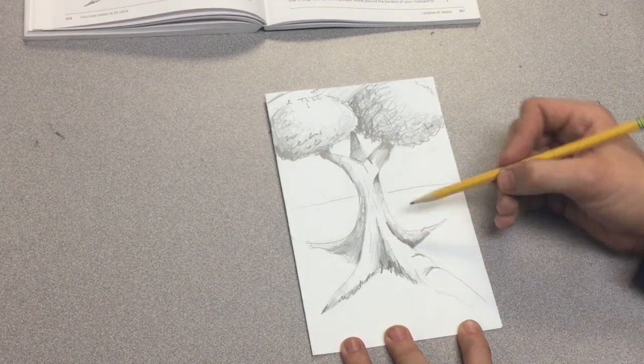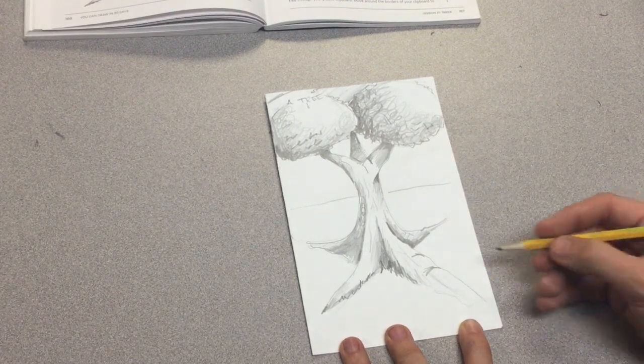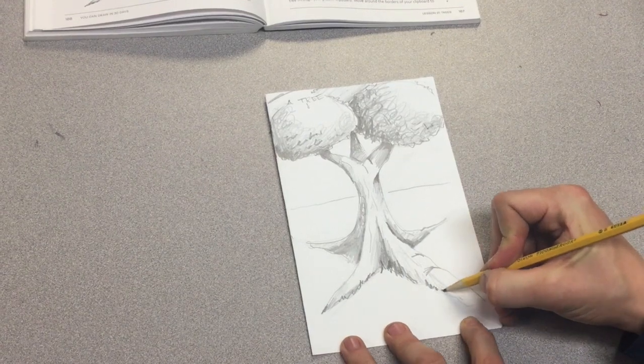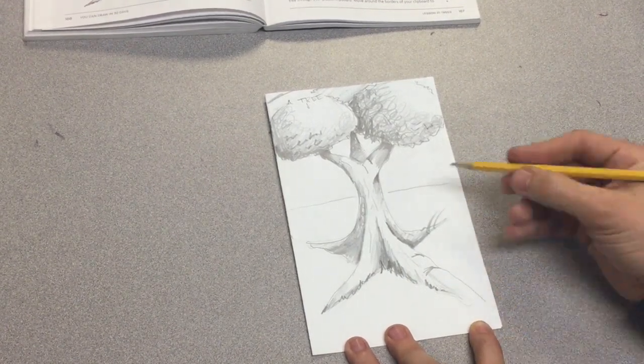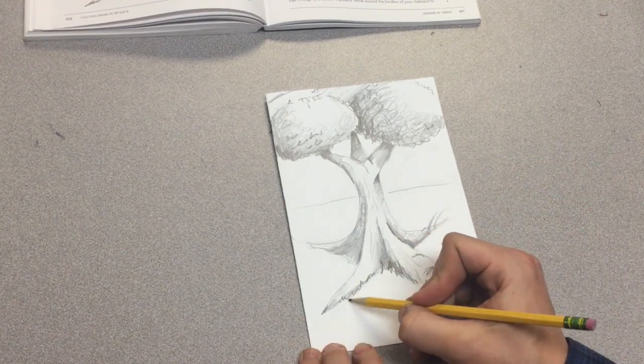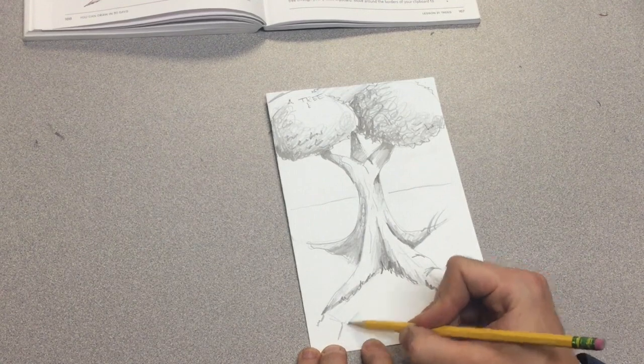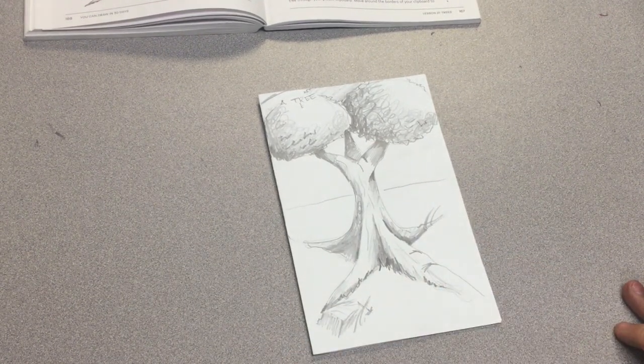And I think I'm looking pretty close to finish for this example of a tree. I'll give it some grass growing out at the bottom. Maybe a stone or two. And there we have it.